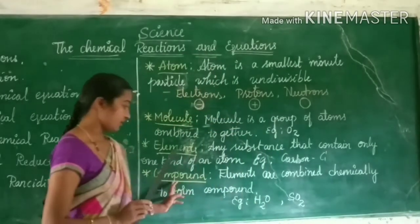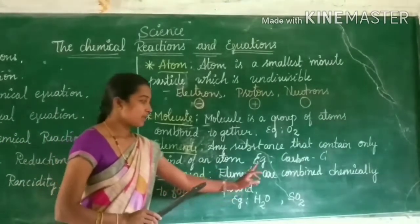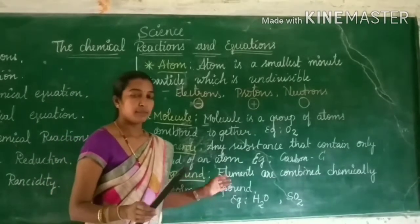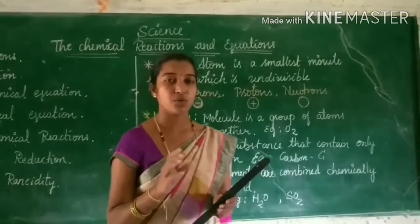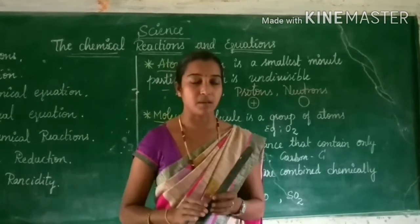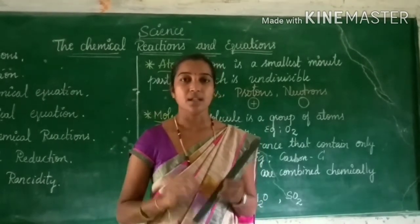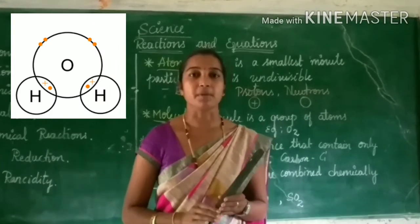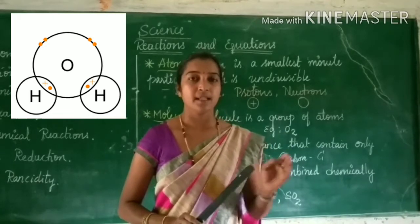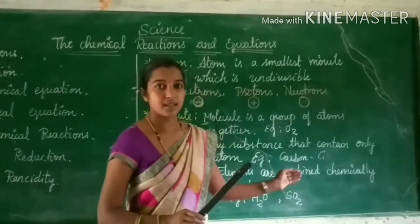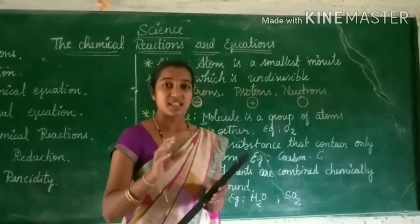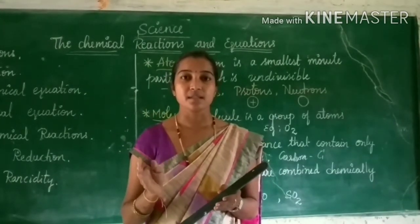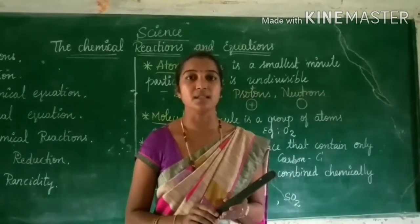Next, we come to compound. Elements are combined together to form a compound. For example, water is a compound. In water, hydrogen and oxygen — both elements — combine in a proper proportion to form water. Here, a new substance is formed, and this change is a chemical change. The new substance cannot be regained to its original state.